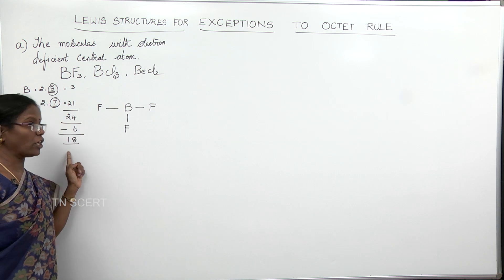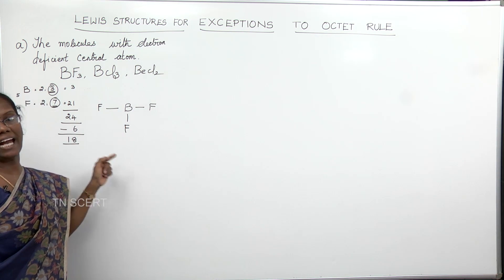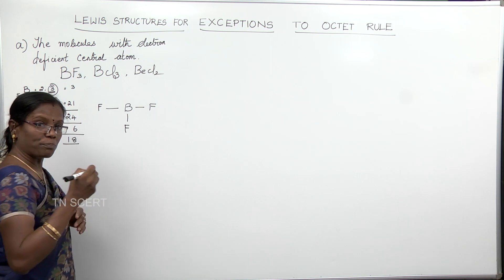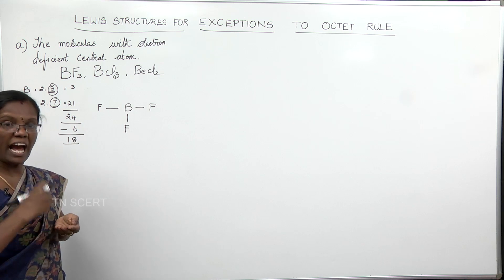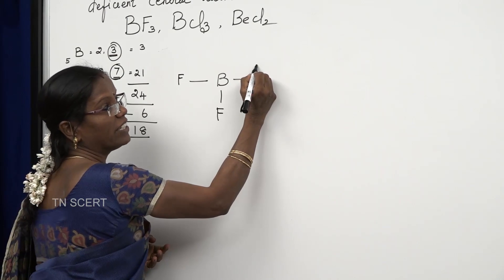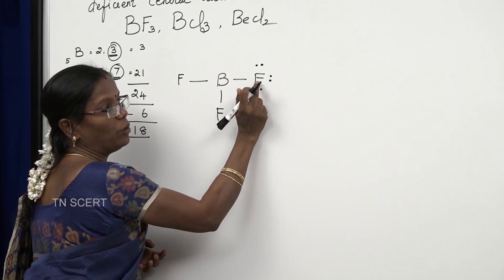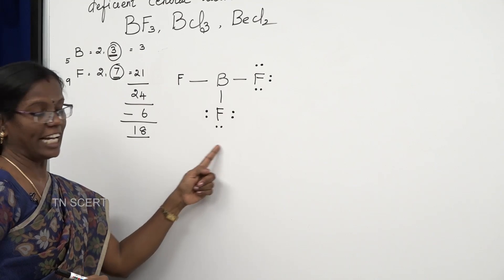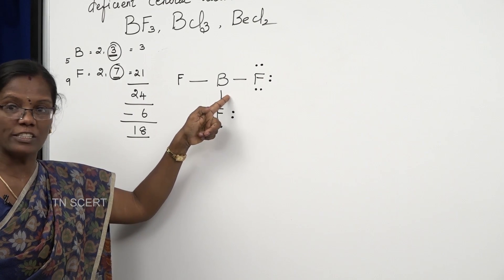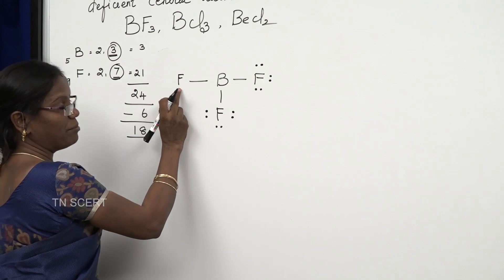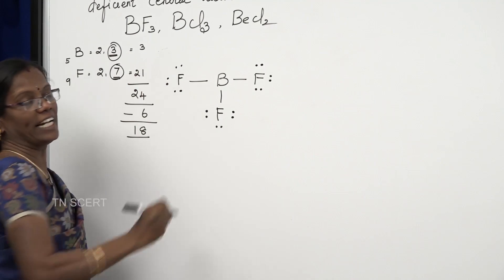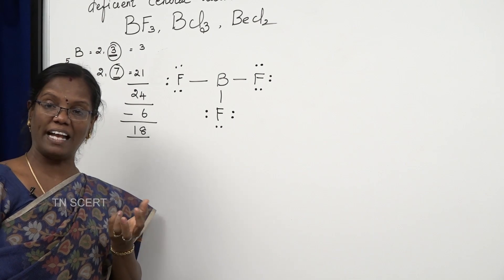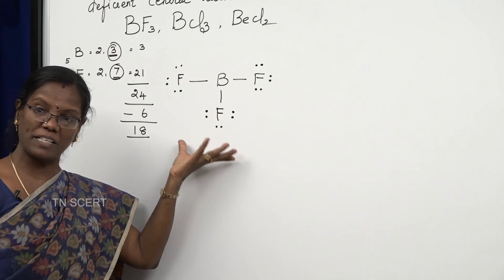These 18 remaining electrons are to be placed around the fluorine atoms until they fulfill their octet structure. Each fluorine already has 2 electrons from the bond, so we give 6 more electrons to each fluorine. After distributing 6 electrons to each of the three fluorine atoms, all fluorine atoms have attained their octet structure, and all 18 remaining electrons have been used.